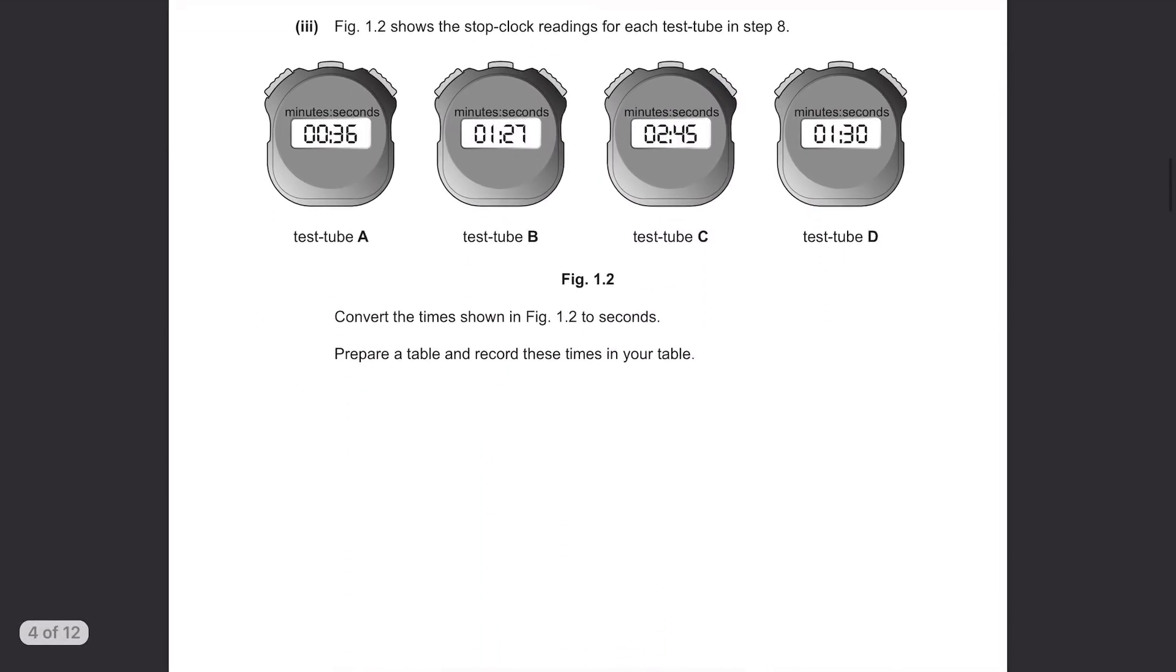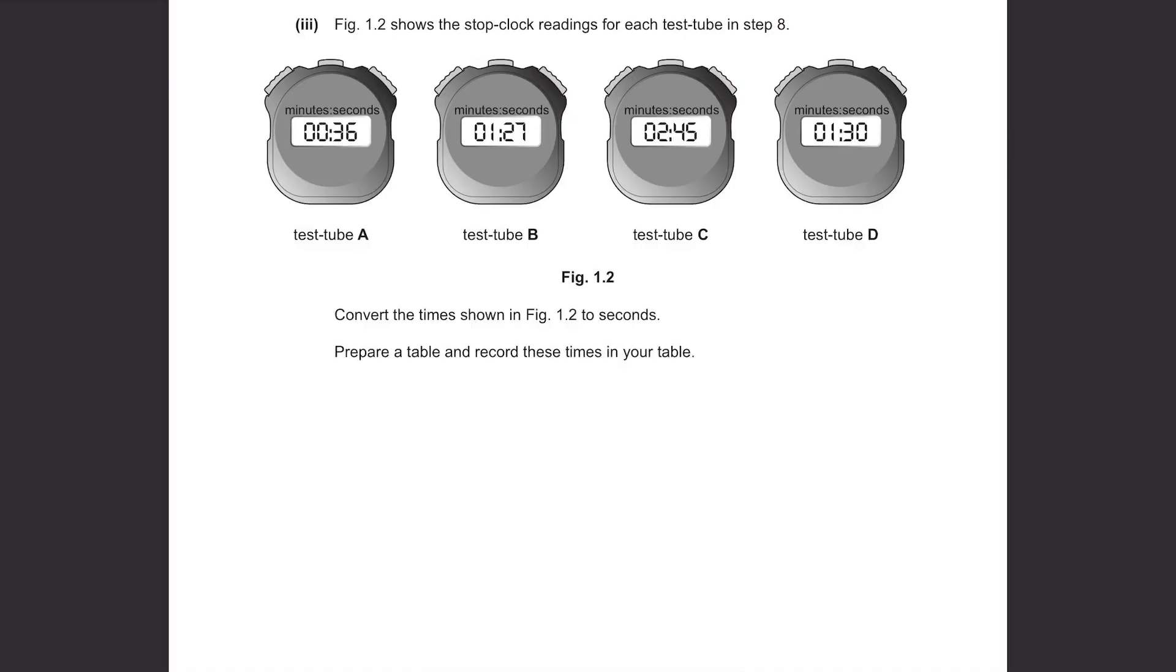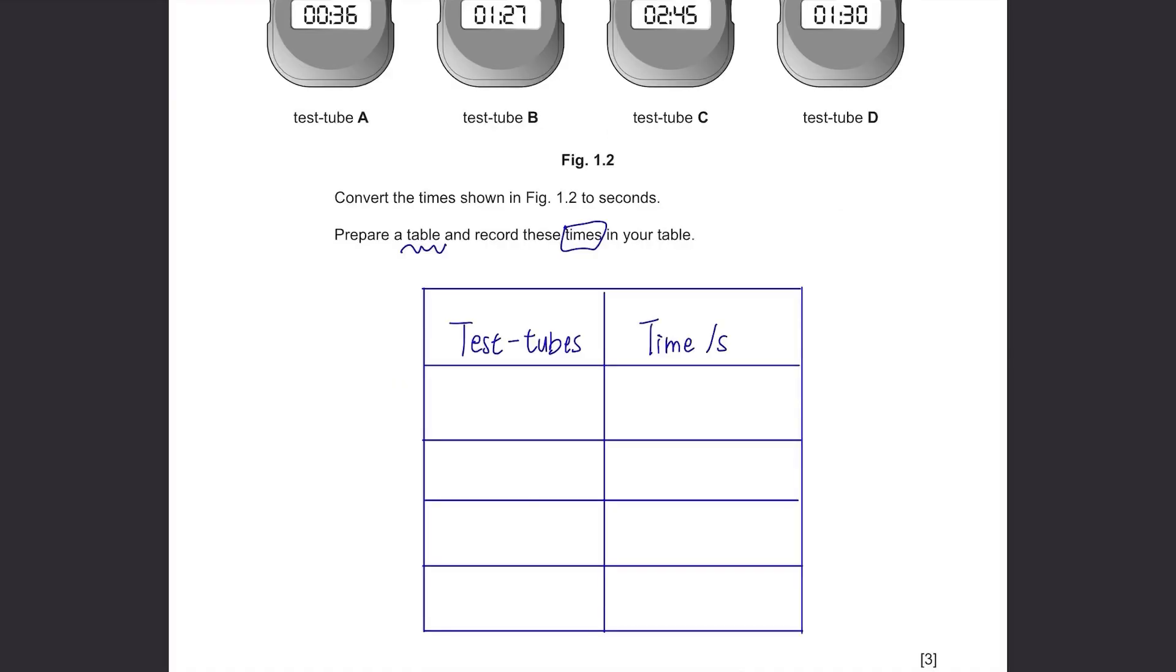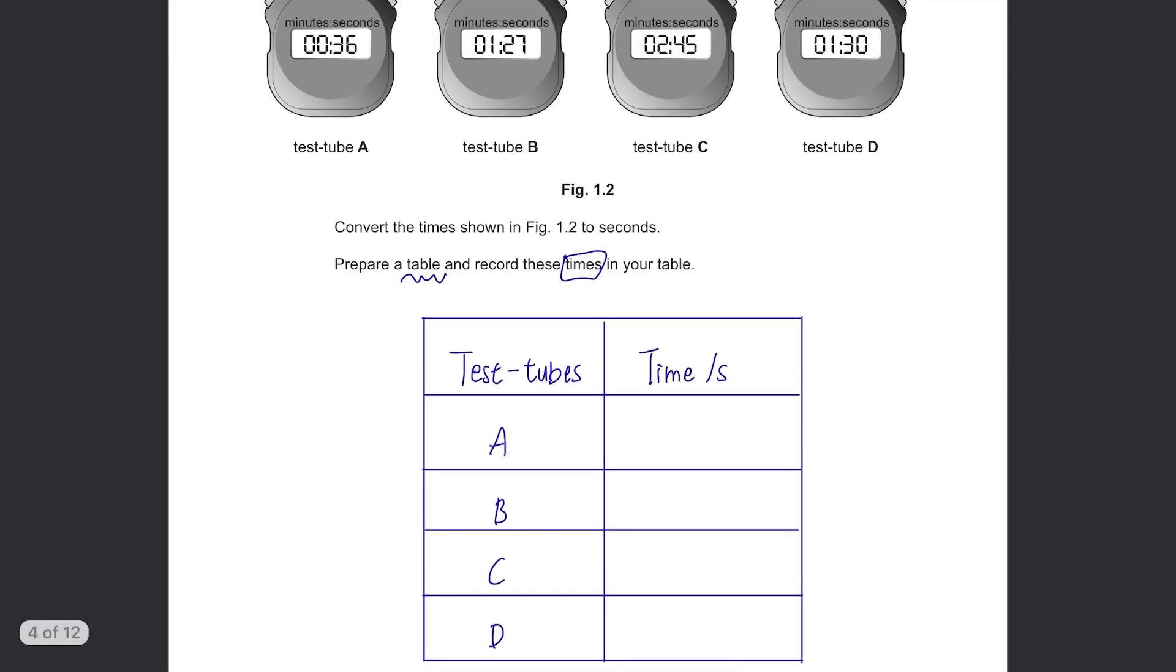Figure 1.2 shows the stop clock readings for each test tube in step 8. Convert the times shown in figure 1.2 to seconds. Prepare a table and record these times. There should be two columns for test tube and time in seconds. Test tubes from A to D and time should be converted to seconds by multiplying the minutes with 60 and adding the seconds. For test tube B, it should be 1 times 60 plus 27 equals 87. For test tube C, it should be 2 times 60 plus 45. And for test tube D, 1 times 60 plus 30.